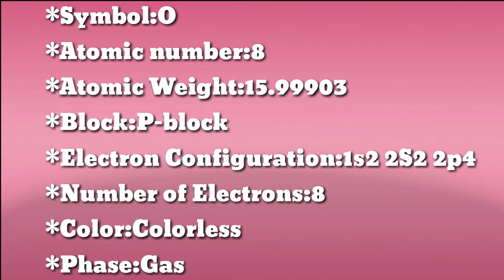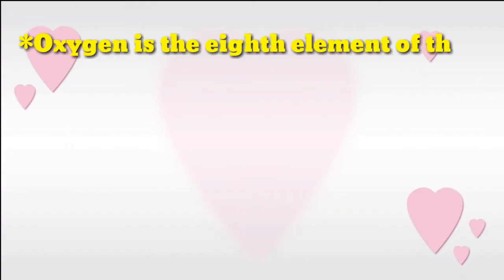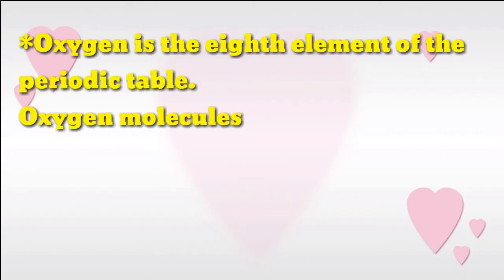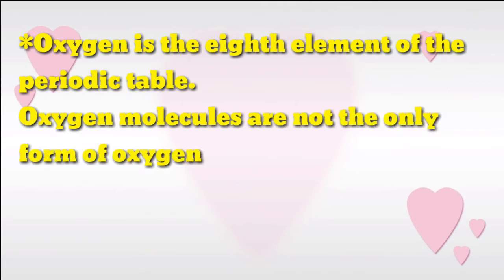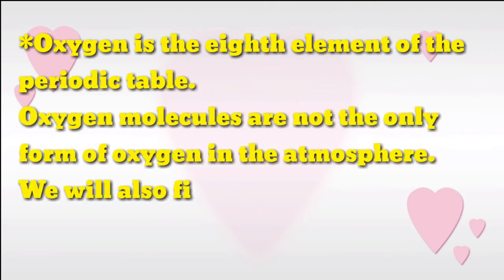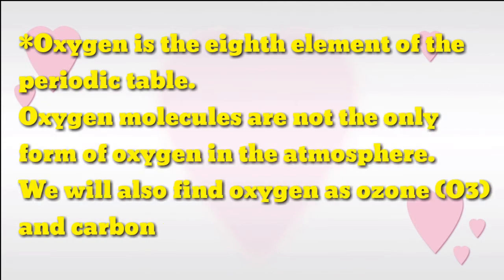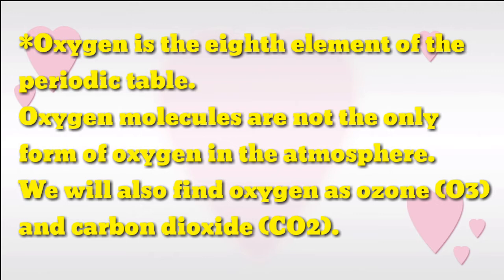Color: Colorless. Phase: Gas. Oxygen is the 8th element of the periodic table. Oxygen molecules are not the only form of oxygen in the atmosphere. We will also find oxygen as ozone and carbon dioxide.